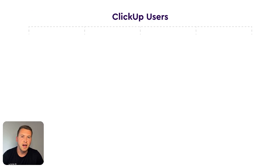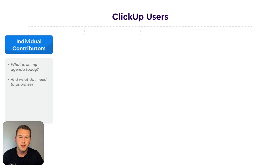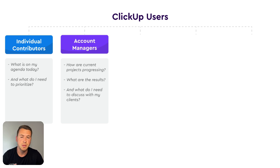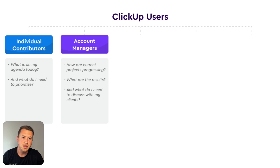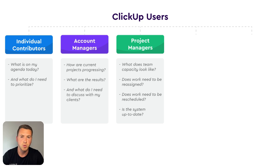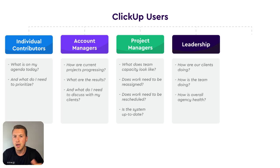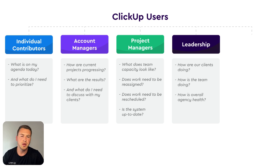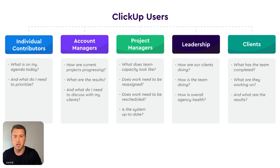As an agency, you need to think about the five different users that are going to be in your system when you start creating these views. Number one: your individual contributors — people who just need to see the work on their plate. Number two: your account management team, who need to see work across multiple clients at a higher level. Number three: project management or team leads, who need views for assigning work, checking capacity, and remapping due dates. Number four: your leadership team, who need to see overall project health across all clients. And lastly, your clients — who need a view of all the work you're doing so you don't have to send them status update after status update.